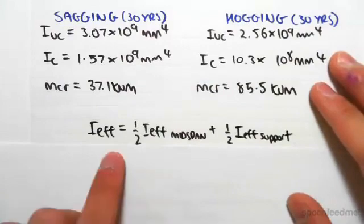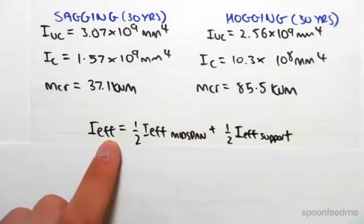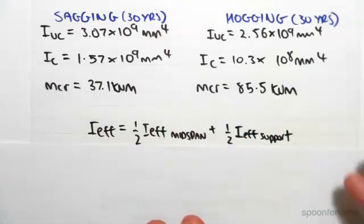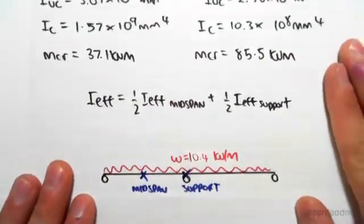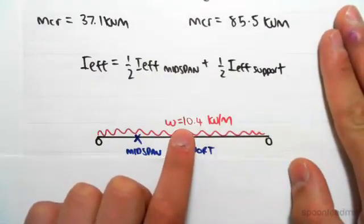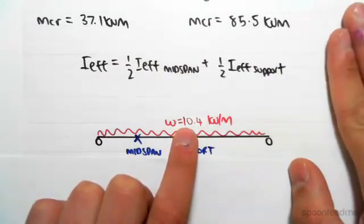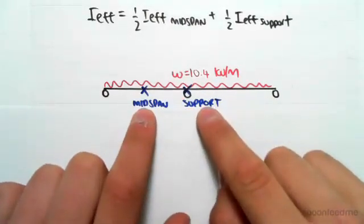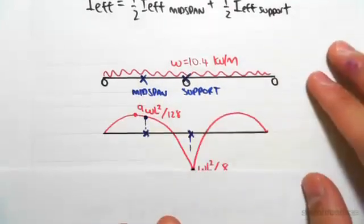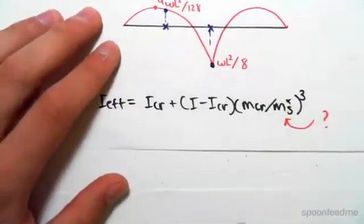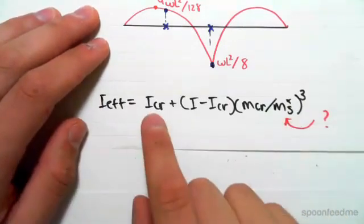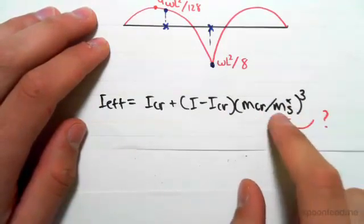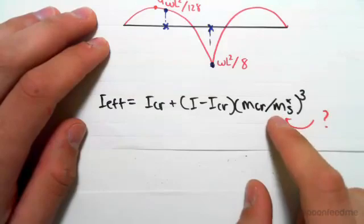We need to find the I_effectives. The general process is to find I_effective, which is half the I_effective at mid-span plus half the I_effective at the support. For our case, W is 10.4 kilonewtons per meter — this is the self-weight plus the live load. The I_effective formula involves I_cracked, I_uncracked, M_cracked, and MS*, where MS* is the moment at that point.